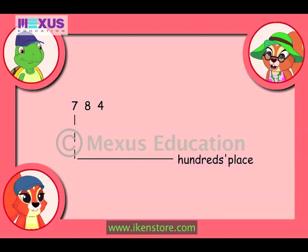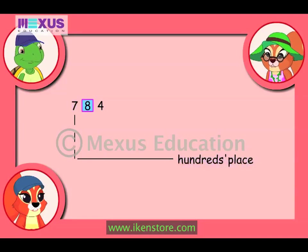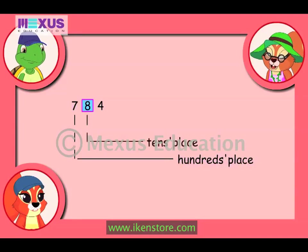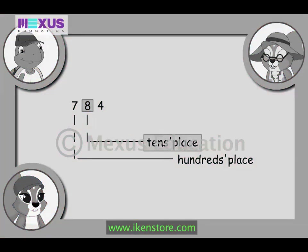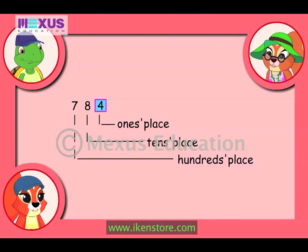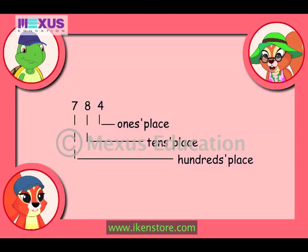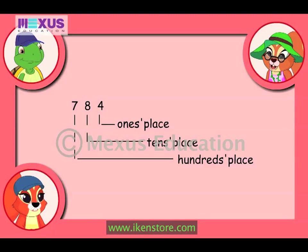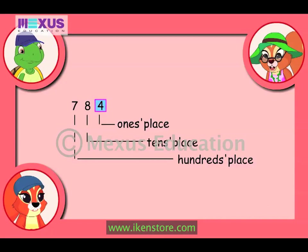The number seven hundred and eighty-four has seven hundreds. The middle digit is the tens place. It tells you that there are eight tens. The last or right digit is the ones place, which is four in this example. Therefore, there are seven sets of hundred plus eight sets of ten plus four ones in the number seven hundred and eighty-four.